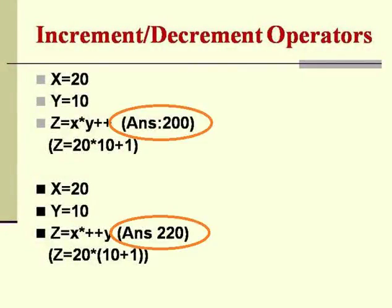We are using the increment operator in both cases, but the result for the first one is 200 and for the next one it is 220 — all because of the positioning of these increment operators. The same thing holds good for -- (minus minus) as well, which is called a decrement operator. Decrement reduces the value of the variable by 1, while increment increases it by 1. The position of the operator makes a significant difference in the final result, which is the importance of these unary operators.